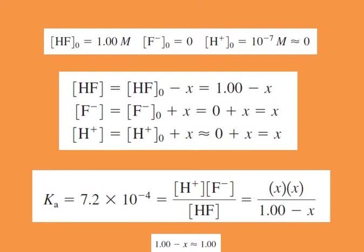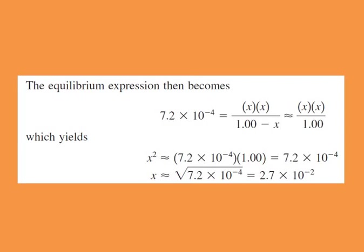Since X is much smaller than 1, we neglect the X in the denominator. That reduces to X squared divided by 1 equals 7.2 × 10⁻⁴. So X squared equals approximately 7.2 × 10⁻⁴, and X equals the square root of 7.2 × 10⁻⁴, which is 2.7 × 10⁻². This is the concentration of proton. pH equals negative log of [H⁺], which gives pH equals 1.57.